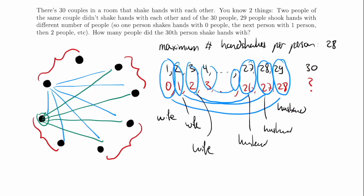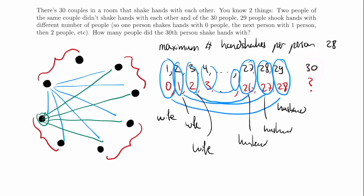The 30th person actually only shakes hands with all the husbands. The husband who shook hands with 28 people obviously shook hands with number 30. The next husband shook hands with everyone except two wives, so he does shake hands with number 30 as well. So number 30 shakes hands with all the husbands. Since there are 15 couples, excluding him and his wife, there are 14 other couples. So he shakes hands with 14 people — that is the answer.